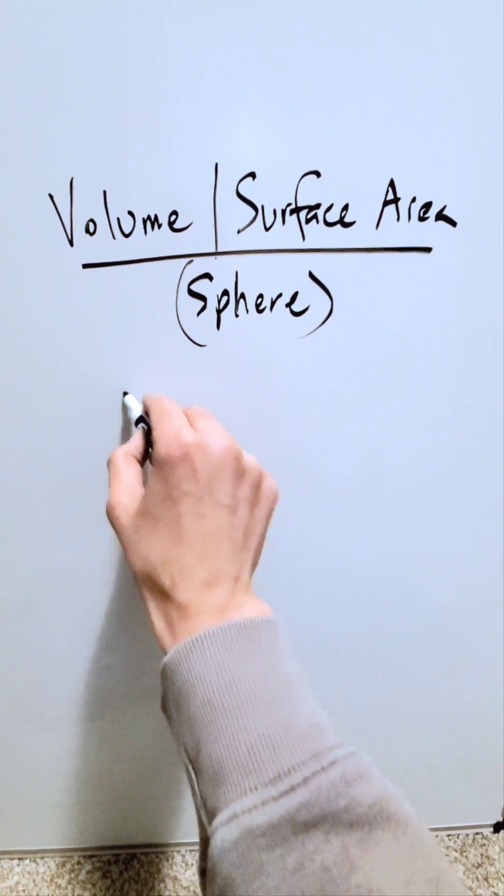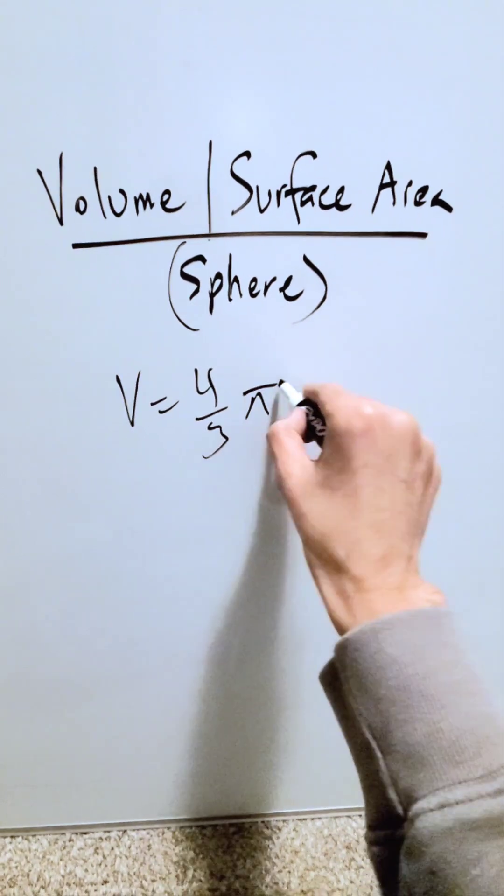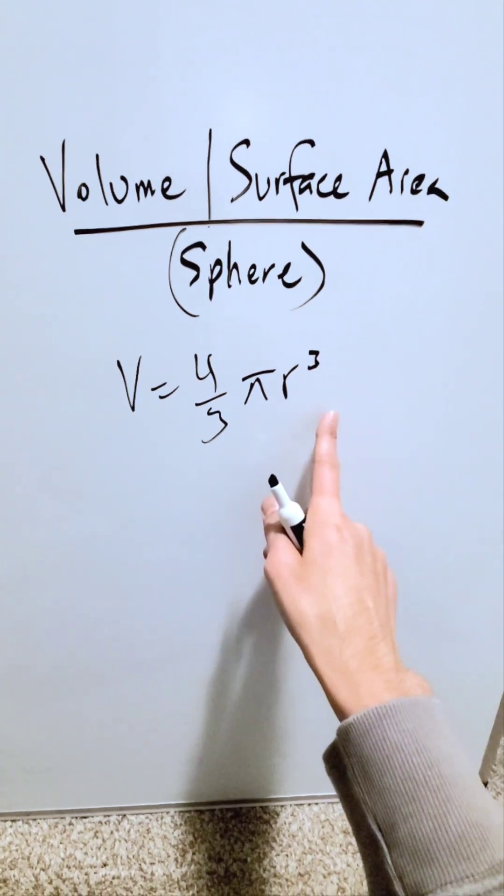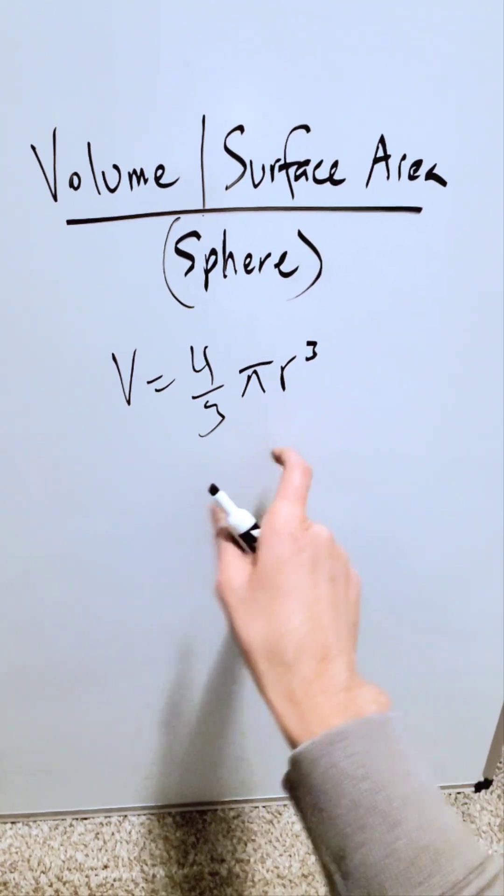Look, you know volume is equal to 4 over 3 pi r cubed for a sphere. But in this, there's a hidden relationship. Let me show you.